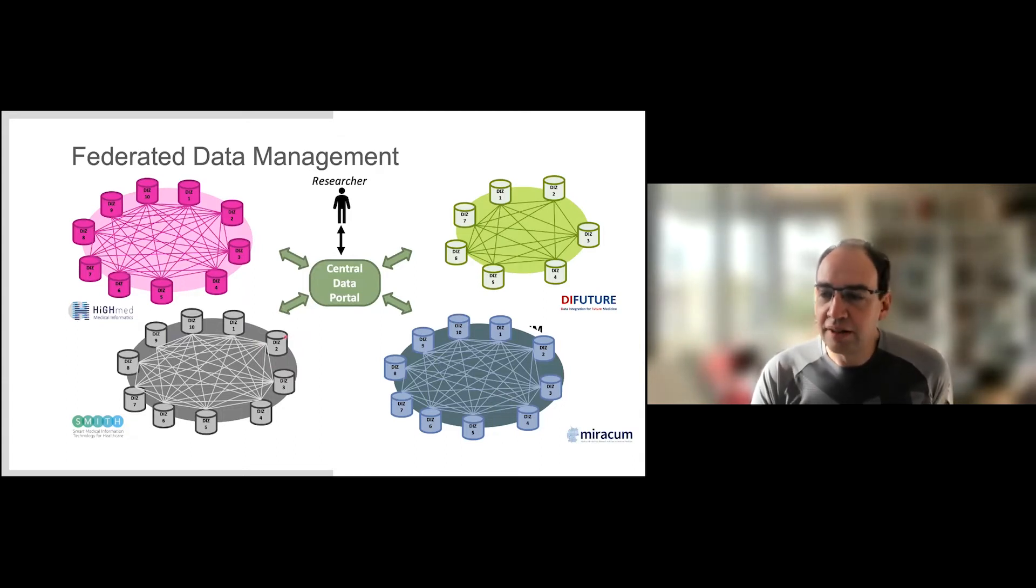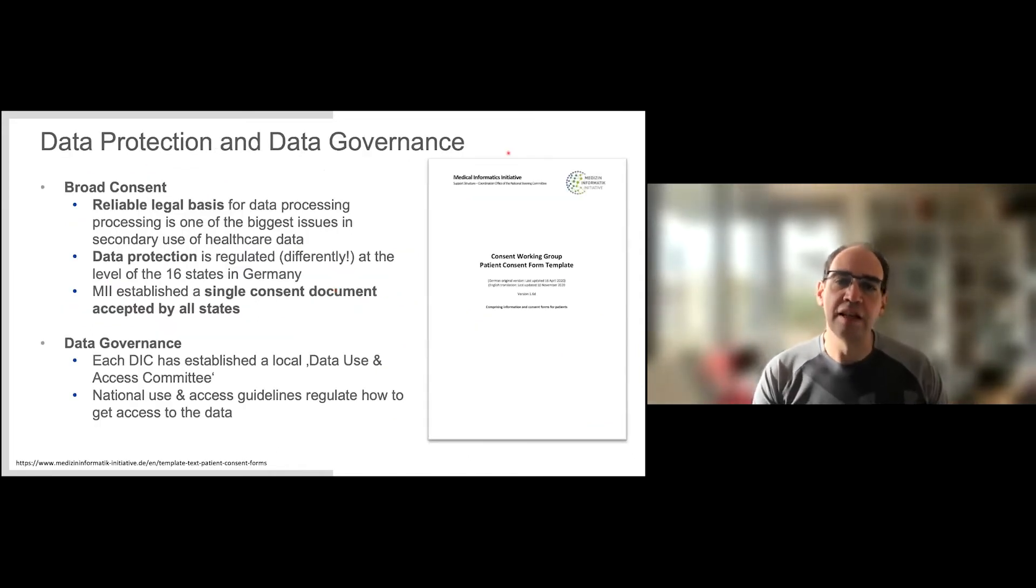This initiative was designed with four consortia: HiGHmed, SMITH, DIFUTURE, and MIRACUM. These consortia have 10 to 15 sites that they connect, and then there's a central data portal that allows access to this data. What have we achieved in the first five or six years? One big achievement is the broad consent, similar to the general consent in Switzerland. After only three to four years of negotiating, we could establish a single consent document accepted by all data protection agencies of the 16 states and the federal data protection officer.